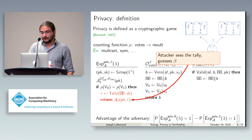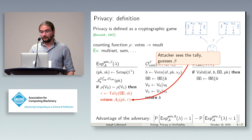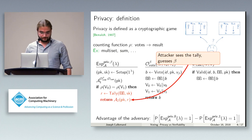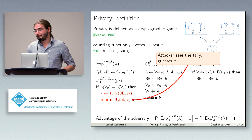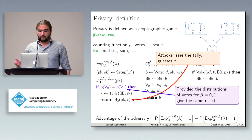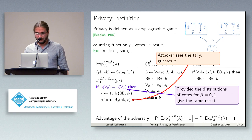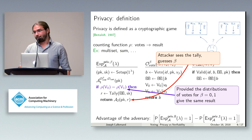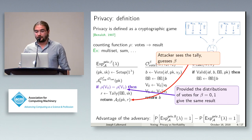This would be too strong a property, because the attacker can see the result of the election and can anyway distinguish between two distributions that do not give the same result. That is why we have an additional condition: we only show the result to the attacker provided that the two distributions it proposed give the same result. We define the adversary's advantage, as is usual for indistinguishability games, as the difference of probabilities that it answers one depending on whether the secret bit was zero or one. The voting protocol is private if no attacker has a non-negligible advantage.